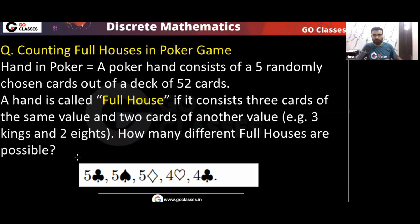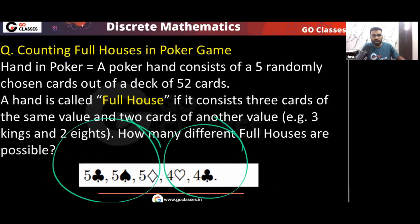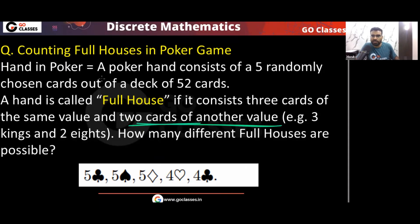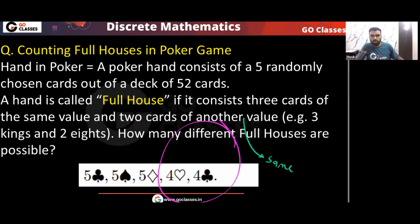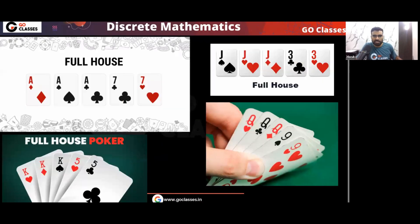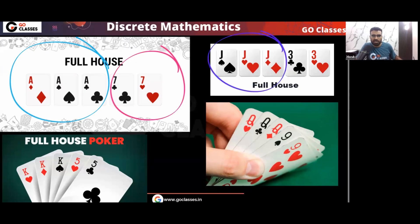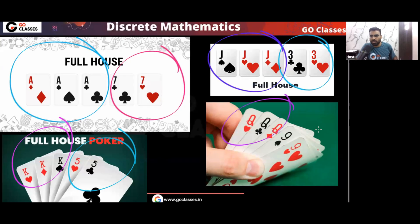How many different full houses are possible? On your screen you can see examples of full houses. For instance: 5, 5, 5 with 2 cards of another same value — that's a full house. Also J, J, J with two 3s is a full house. K, K, K with two 5s is a full house. And Q, Q, Q with two 9s is also a full house. I hope you understood the definition of full house.